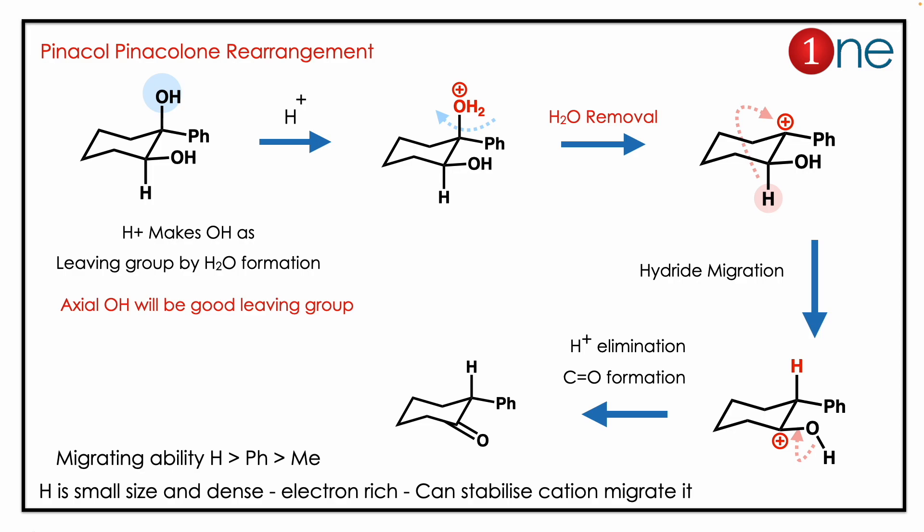You start with a diol and end with a ketone via the rearrangement system. Migrating ability is the deciding factor. Hydrogen has the highest migrating ability because of its small size and high electron density — it readily mobilizes and stabilizes the carbocation.